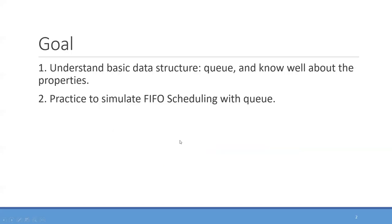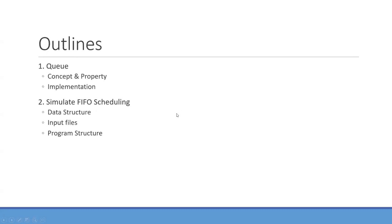Today's tutorial mainly has two goals. The first one is to review the basic data structure Queue and to understand the FIFO property of the Queue. The second one is to practice simulating FIFO scheduling with the Queue. For the Queue, we will introduce both concepts and properties, and also talk about our implementation used in this tutorial and Boundaries Assignment 3. For the second goal, we will first introduce the data structures and how we consume the input files, and last we will talk about our program structure.